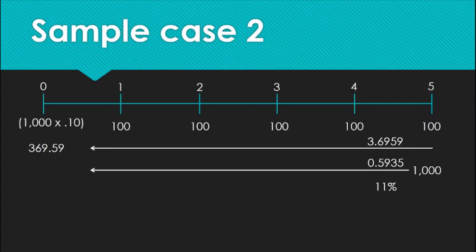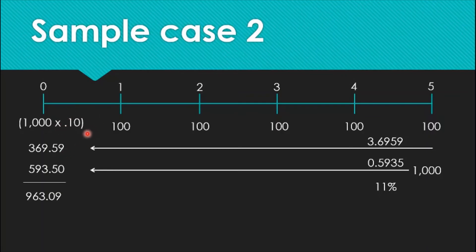The present value of the par value is 0.5935 times 1,000, which is 593.50. Adding the two up, the value of the bond is 963.09 pesos. This time, note that the required rate of return is greater than the coupon rate. This is the reason why the market value of the bond is less than the par value. Naturally, if you require a rate of return greater than the coupon rate, to motivate you to take the bond, it should be valued at a lower amount than the par.